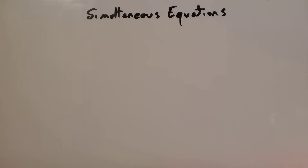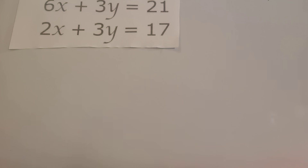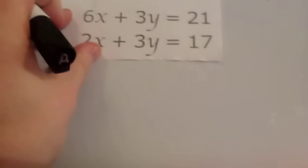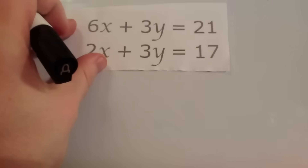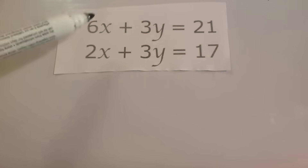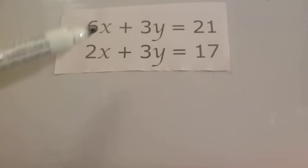Here's a typical set of simultaneous equations. We've got 6x plus 3y equals 21, and 2x plus 3y equals 17. We need to find what x and y are. There's one pair of values for x and y that will satisfy both equations — put them in and you'll get 21 from the first and 17 from the second.